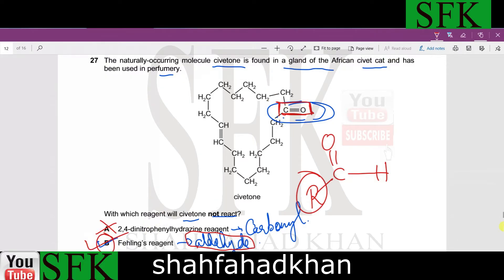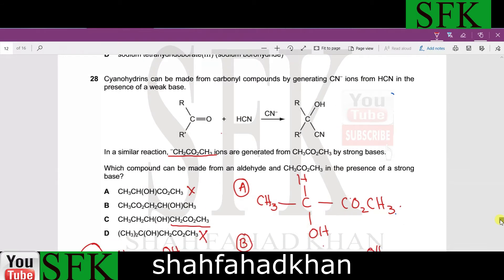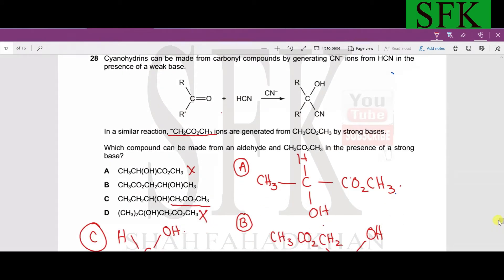Now moving on to 28. This is an interesting question. Cyanohydrins can be made from carbonyl compounds by generating cyanide ions from HCN in presence of weak base. In a similar reaction, this is an ester molecule which forms a nucleophile. Which compound can be made from an aldehyde and this compound in presence of a strong base? Let's check them out.